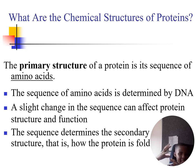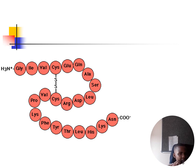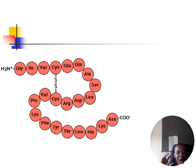The sequence of the primary structure determines the secondary structure, because there is a specific way in which the amino acids link, which affects their folding. You can see an example of a primary structure here — proteins have an amino group and a carboxyl group. There are 20 amino acids, including glycine and alanine, and the way they link affects the secondary structure.